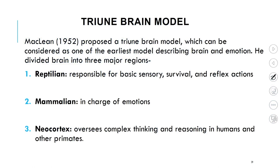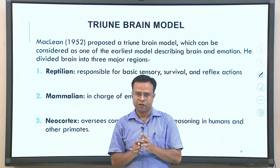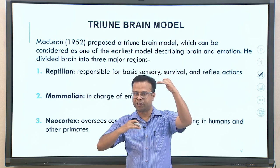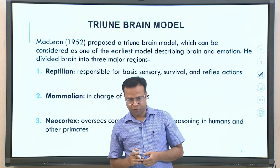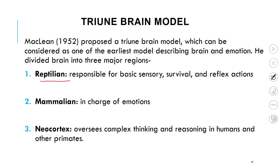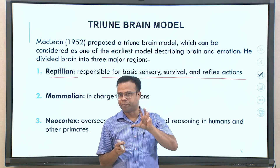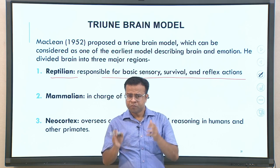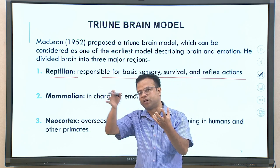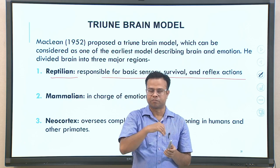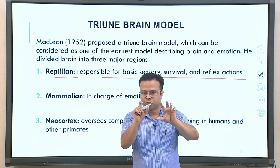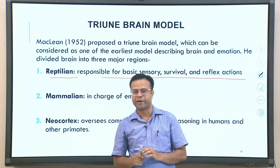MacLean in 1952 proposed this triune model of the brain — one of the earliest models describing how the brain is associated with emotions. He divided the human brain into three segments. According to him, as evolution happened, different segments appeared one above the other. The first is called the reptilian part of the brain, responsible for basic sensory survival and reflex actions — instinctive functions required for survival shared with all other animals. This part does not change much with learning; it is rigid and repetitive in its instinctual behavior.